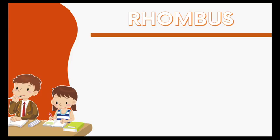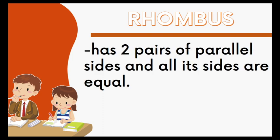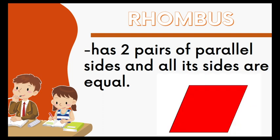Let us first discuss what is a rhombus. A rhombus has two pairs of parallel sides and all its sides are equal. This is an example of a rhombus — all of its sides are equal. This is the first pair of parallel sides and this is the second pair of parallel sides.